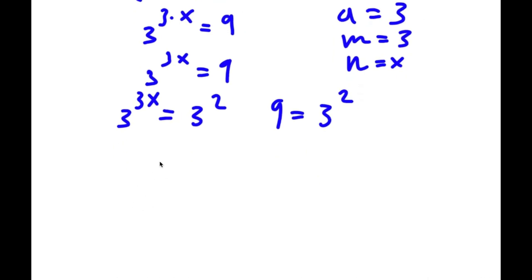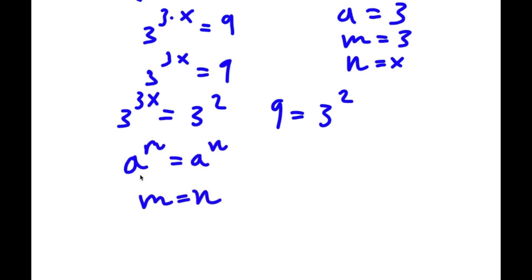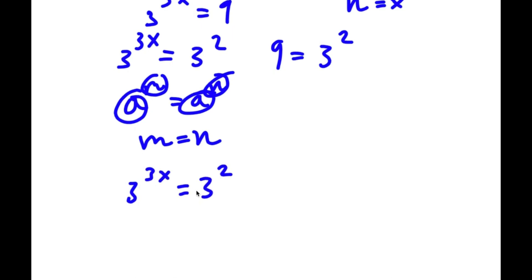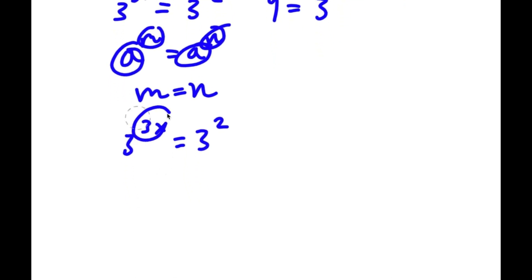Another property of exponents is that if I have something in the form a to the power of m equals a to the power of n, this means that m is equal to n, because if the bases are the same, the exponents must be equal as well. So for 3 to the power of 3x equals 3 to the power of 2, this means the exponents 3x and 2 are the same.